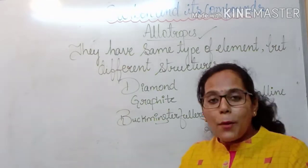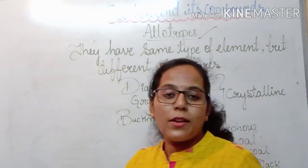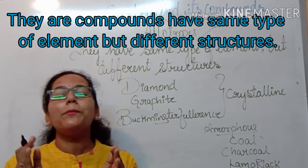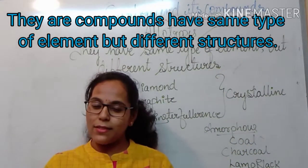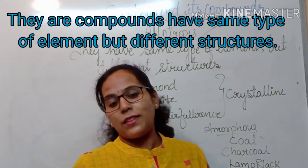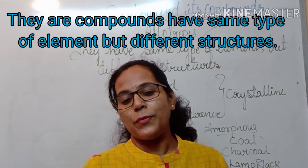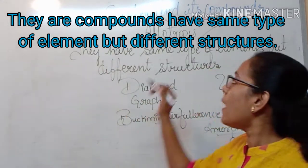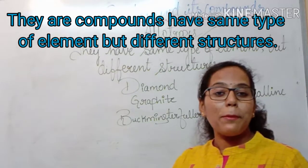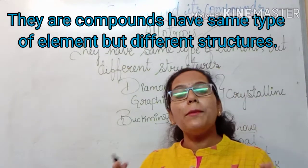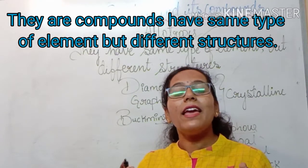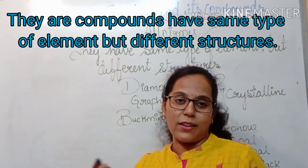When we talk about allotropes, they are the compounds which are made up of the same type of elements but they have different structures.